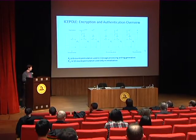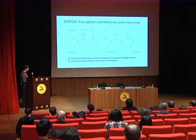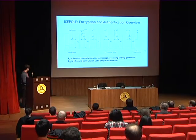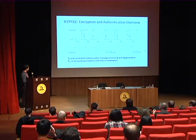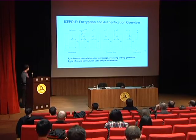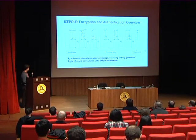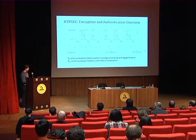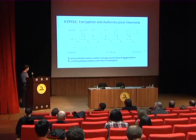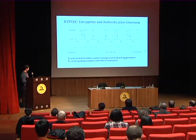For encryption and authentication, first the key, nonce, and IV are mixed. After that, a 12-round permutation is performed. Then the secret message number is injected into the state, and the AD blocks are processed after padding using a 6-round permutation P6. Encryption is performed by XORing the plaintext with part of the state, like a stream cipher. The plaintext is then padded and injected into the state. Finally, the tag is generated after another 6-round permutation.